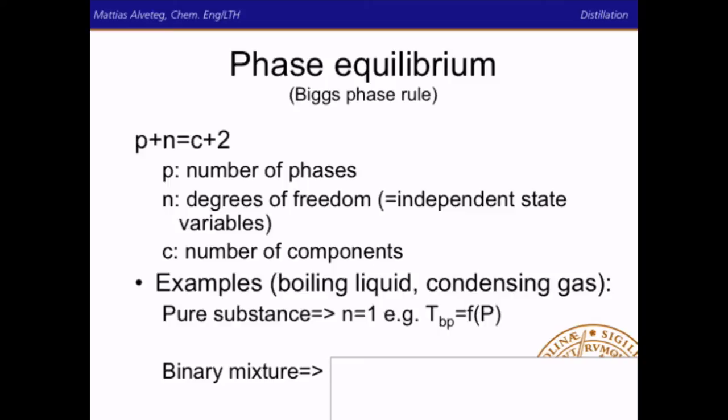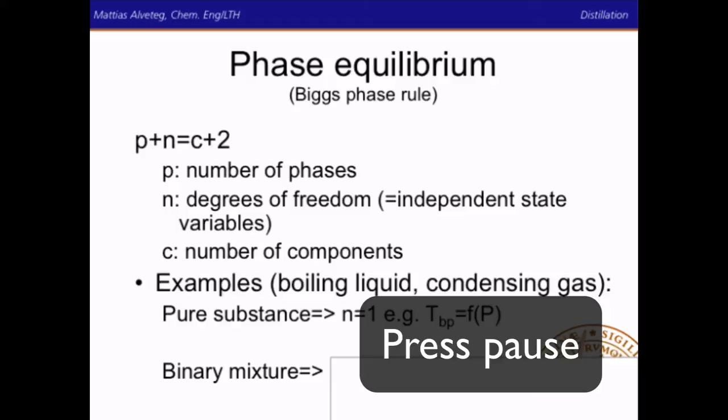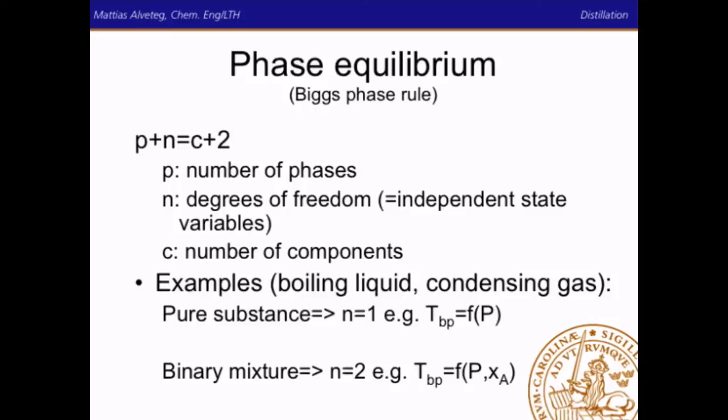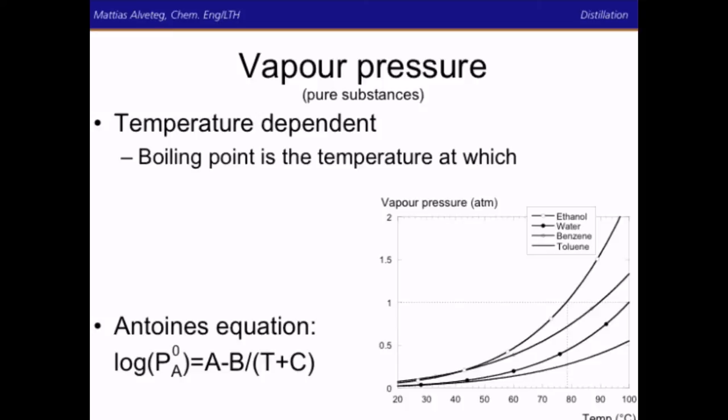For a binary mixture with two components, the answer is two degrees of freedom, which means that if you have the total pressure given and the molar composition, then you can calculate the boiling point. The boiling point is related to vapor pressure. If you have a pure substance at a certain temperature at equilibrium, the gas above this liquid will have a certain partial pressure of this substance — that is the vapor pressure of that substance at that temperature. The boiling point is the temperature at which the vapor pressure equals the total pressure.